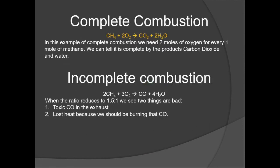Let's look at what complete combustion looks like in a chemical reaction formula. We have CH4 (methane) combining with O2 in a ratio of two parts oxygen to one part methane. When we balance this equation, we end up with CO2 and H2O as our products. This is called a stoichiometric equation because everything is balanced: one carbon on each side, four hydrogens on each side, and four oxygens on each side (two in CO2 and two in H2O). Theoretically, this is called complete combustion, identified by CO2 and H2O as the products.